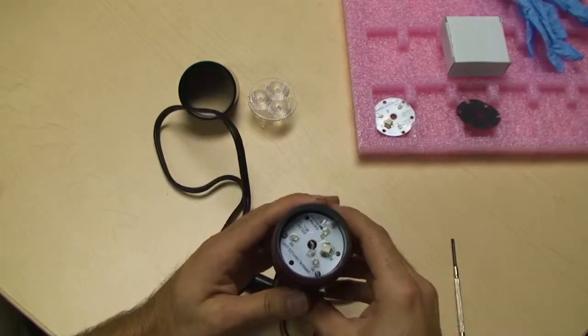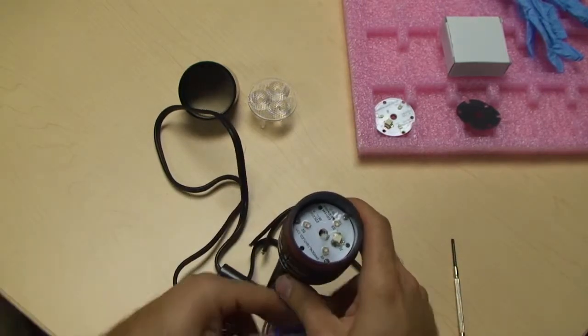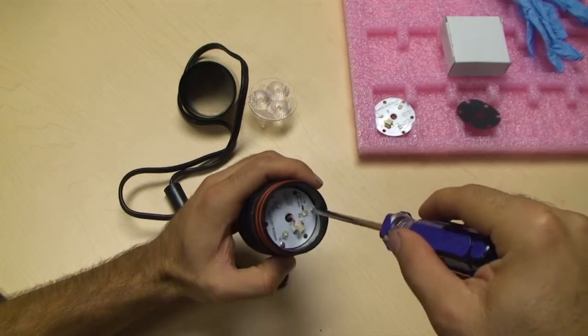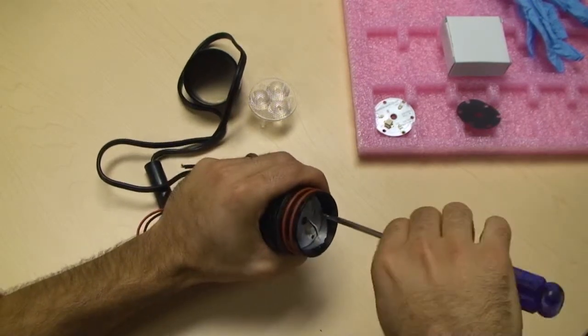Step 6. Unscrew the three LED board screws and put them in a safe place. You will need these screws to screw the new board back in later.